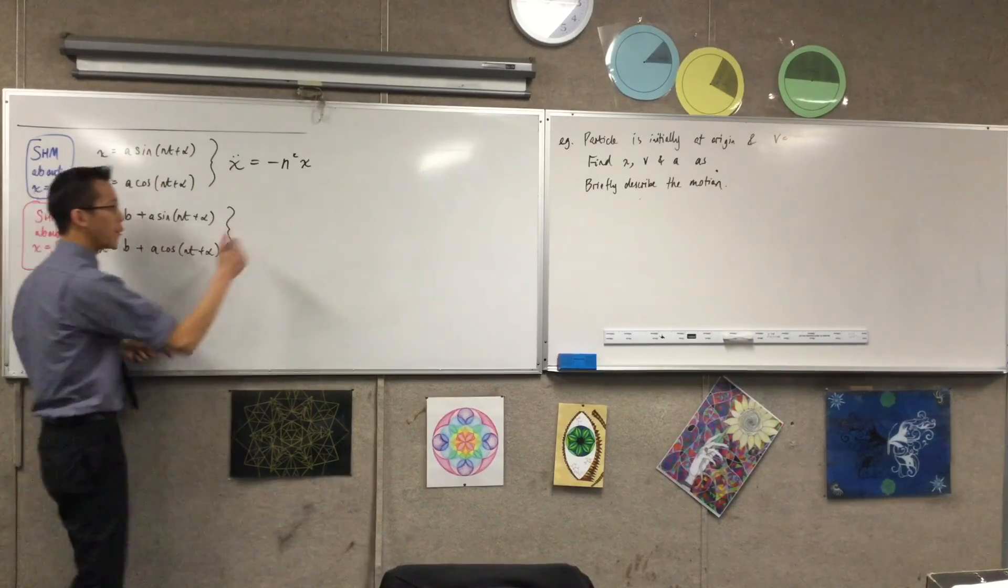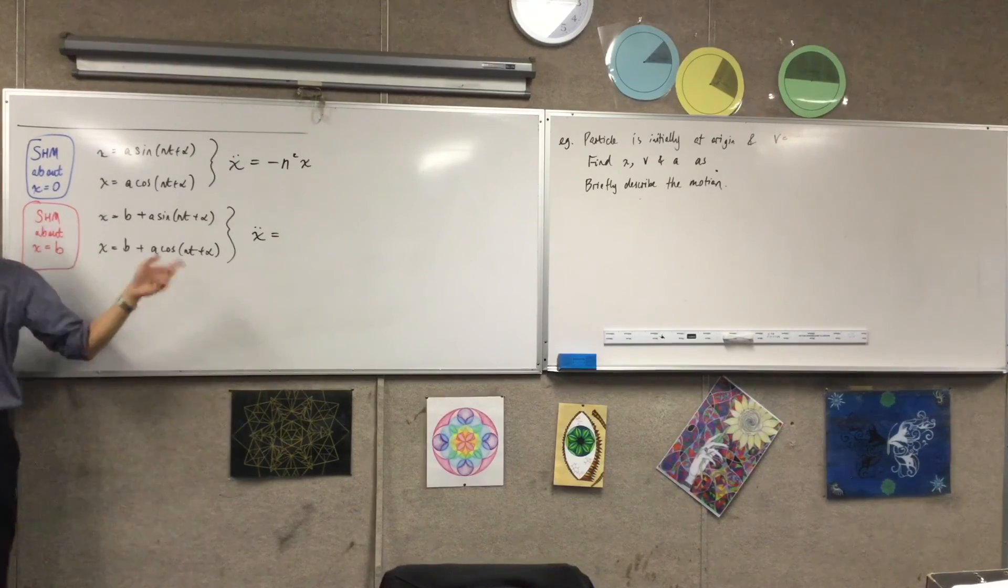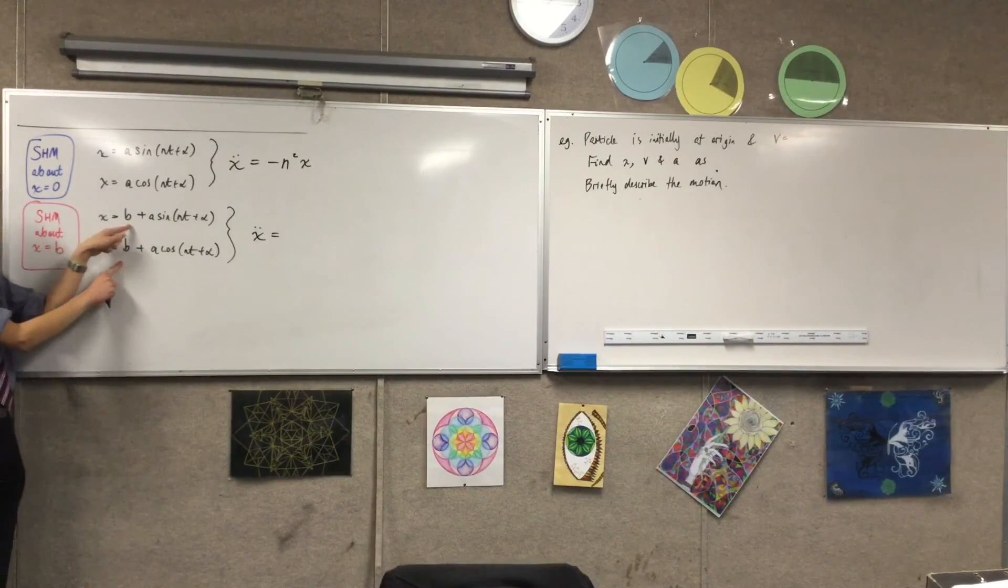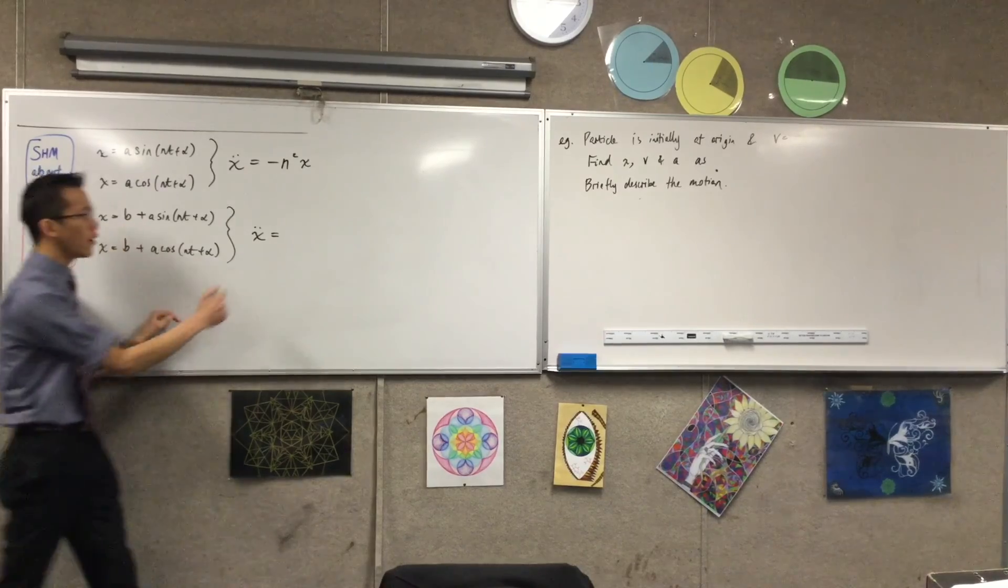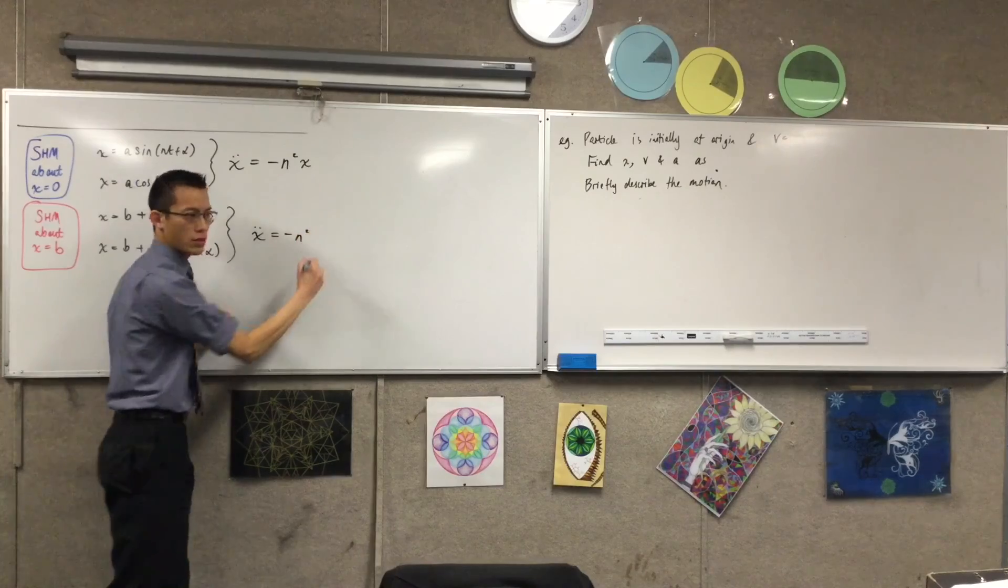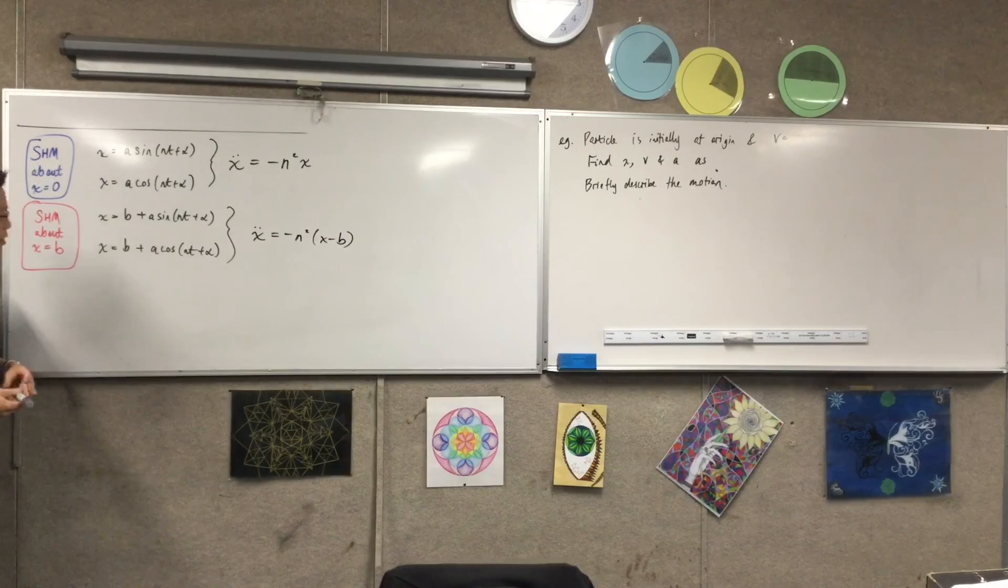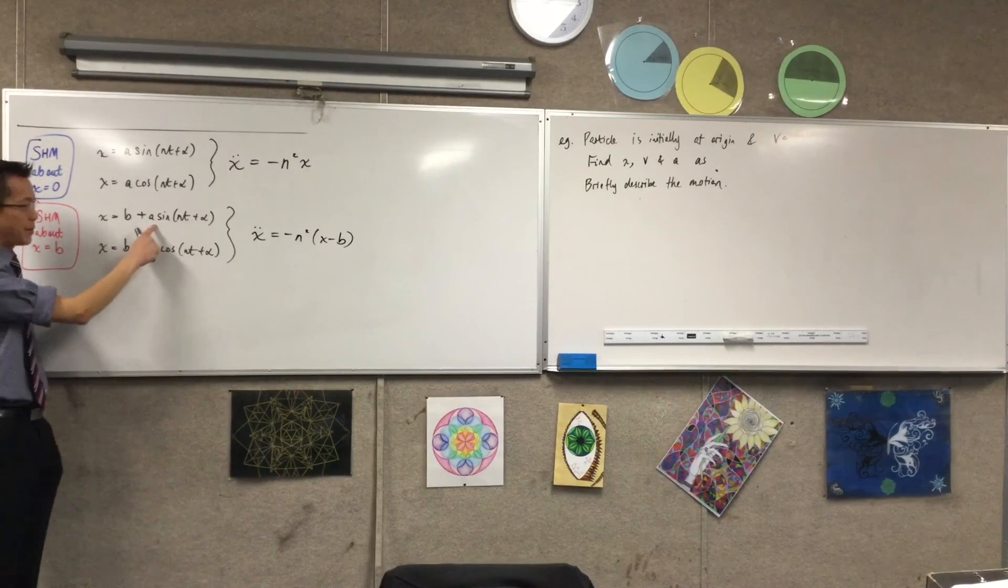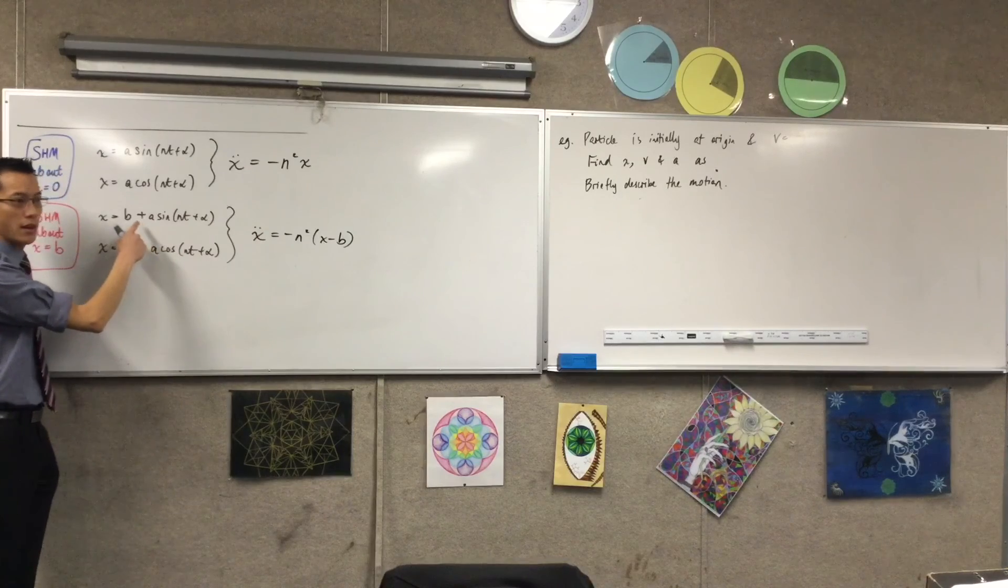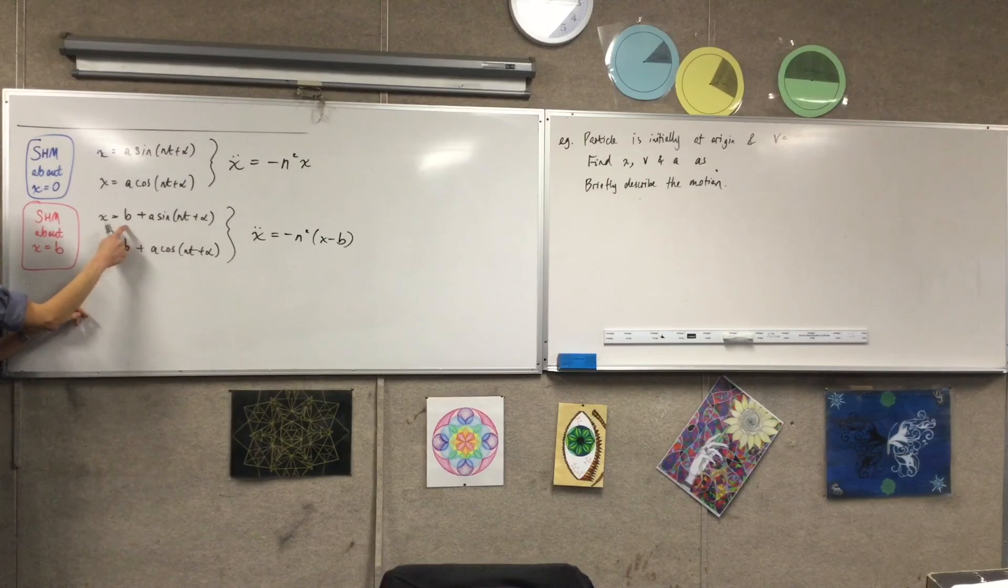In the same way, when we did it for this, because what you've got here, once you do the first differentiation, as soon as you've done that, this b disappears, right? So therefore, what difference do we get here? It's still negative n squared? X plus b. Yeah, very good. Because what you'll get is, first derivative will be a cos nt plus alpha, the second derivative will be negative a sine nt plus alpha, which is everything except for the b.